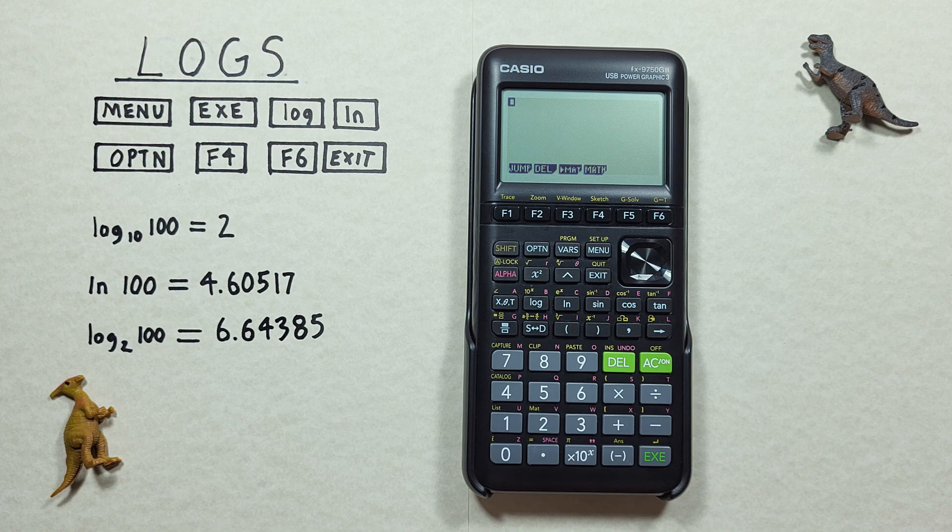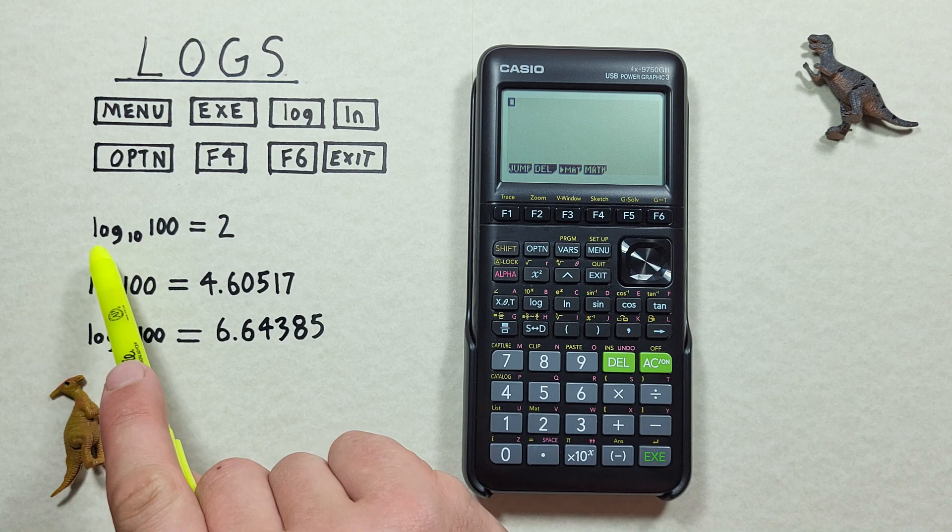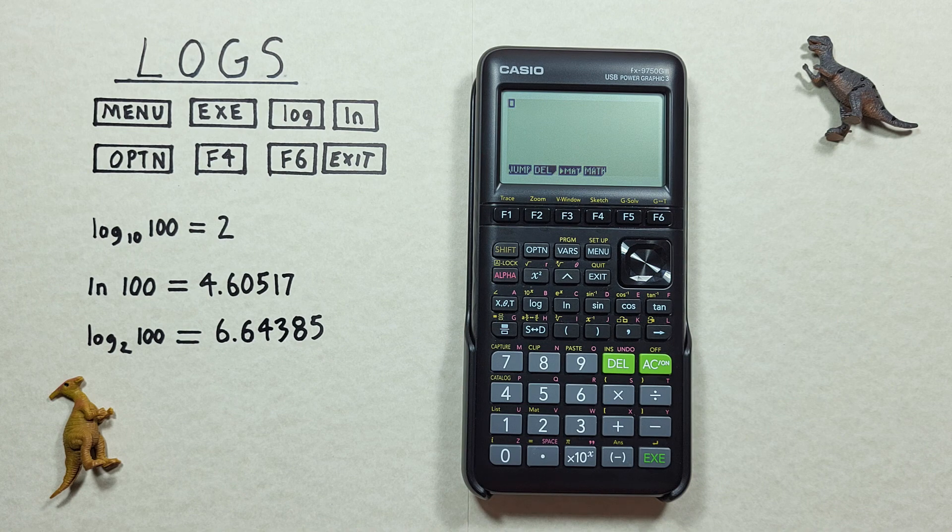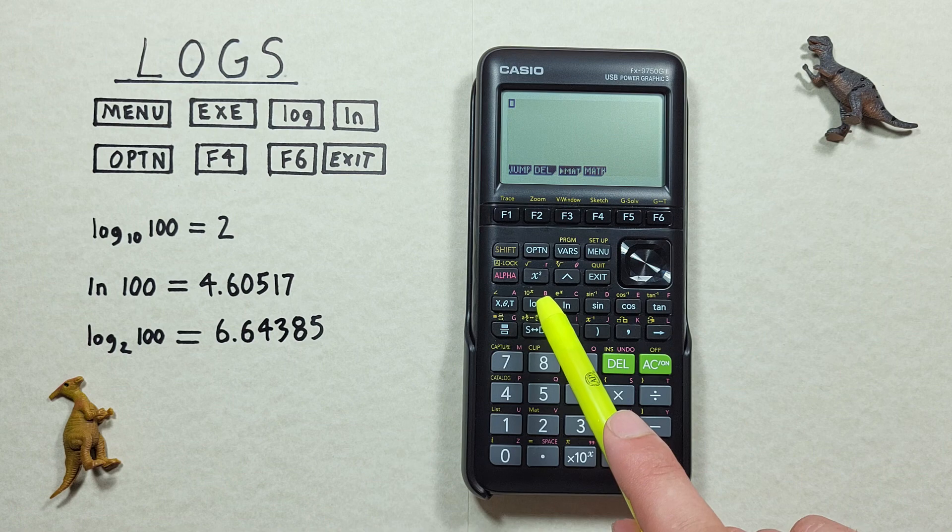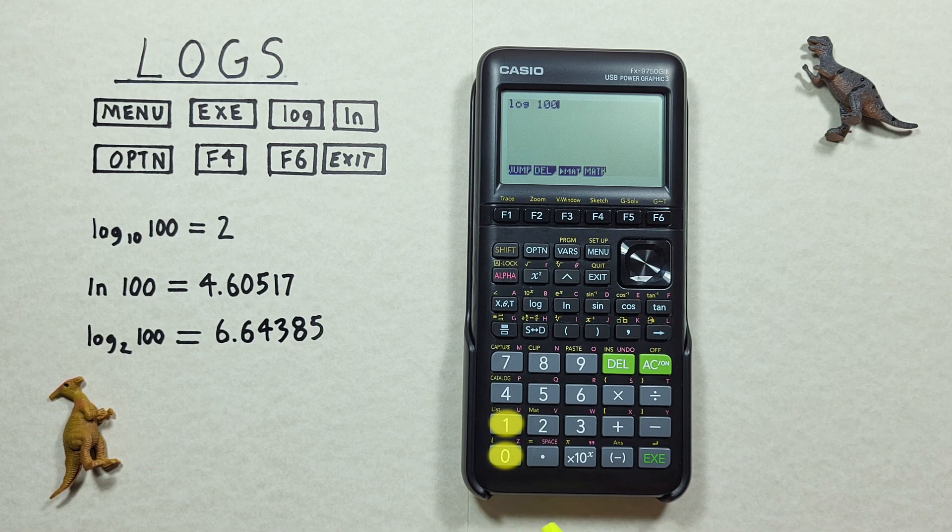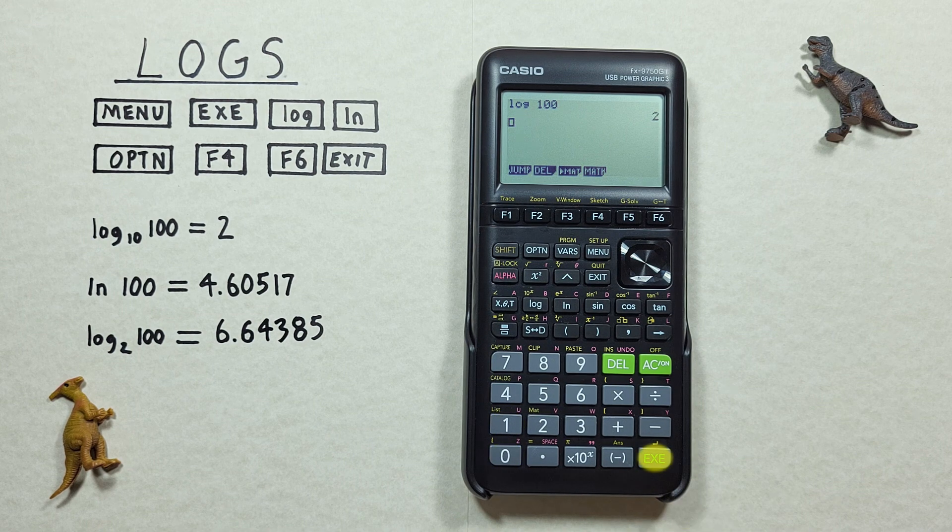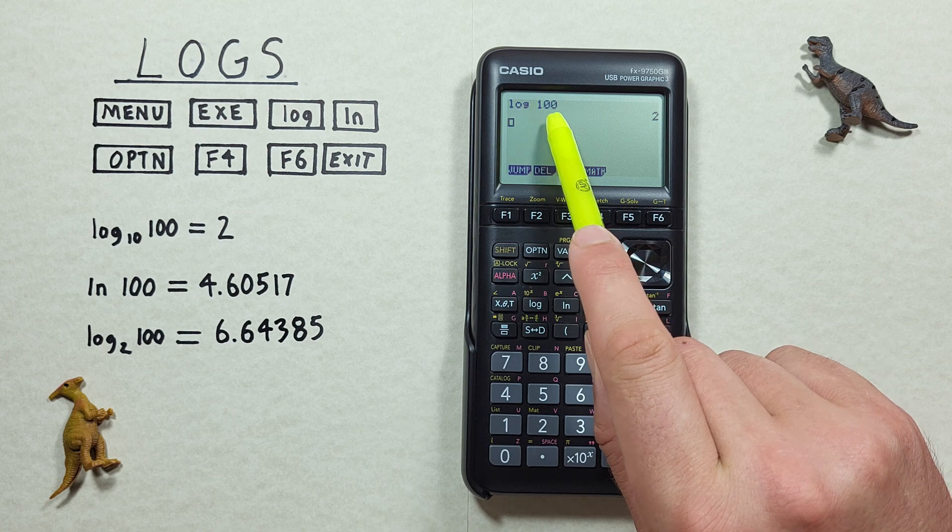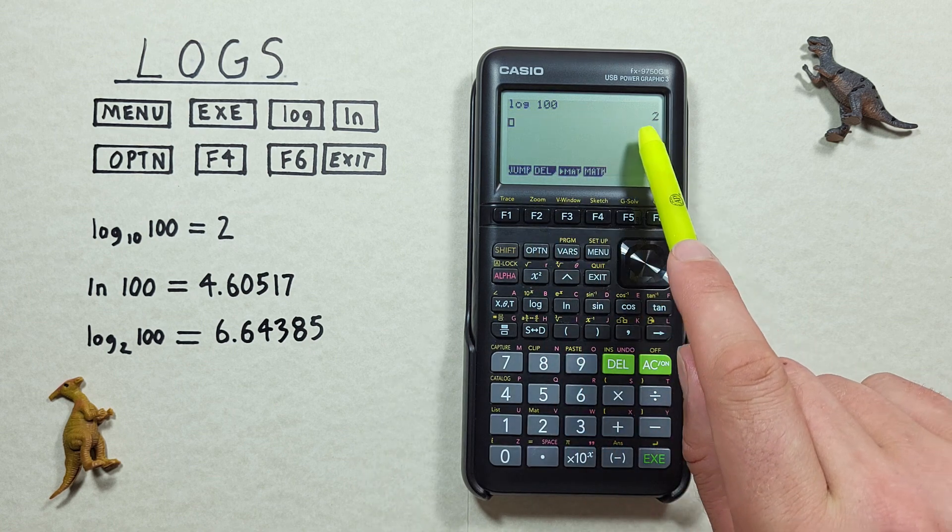The default log base on this calculator is a log base 10. So if you want to find something like log base 10 of 100, or log 100, what we do is press the log key, and then enter the 100, and then press the EXE key. And we see we get log base 10 of 100, or log 100, is equal to 2.